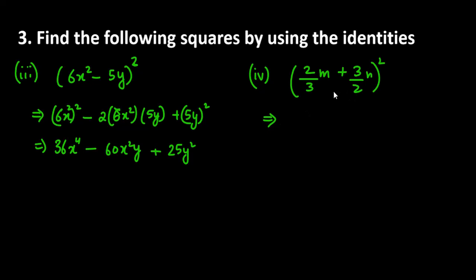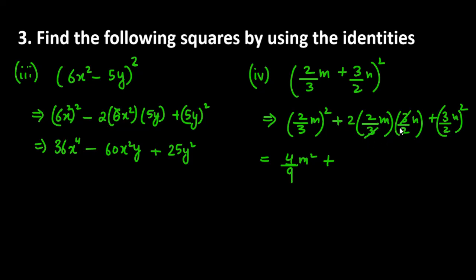Fourth part, a plus b ka whole square use ho ga. 2 over 3m ka square, 2 into a into b is 2 over 3m then 3 over 2n. Last me b ka square which is 3 over 2n ka square. So this is 4 over 9m square. Simplifying, 3 se 3 cancel, 2 se 2 cancel, you have 2mn. Last term is 9 over 4n square. This is the fourth part answer.